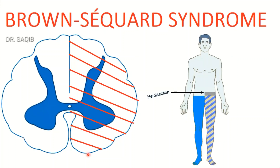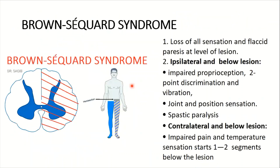Suppose there is a complete section at the hemisection at the T10 level. All of the tracts here, which you have learned from my previous lectures — I am going to mention just the names again. Generally, there is a summary of what will happen at the T10 level: at the level of the lesion, there is loss of all sensation and flaccid paralysis at the level of the lesion. This is a summary; for undergraduates, this is sufficient, but I am going to give a bit more detail.